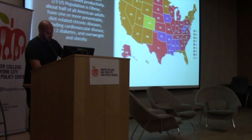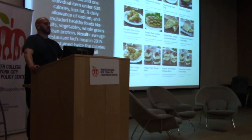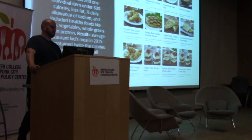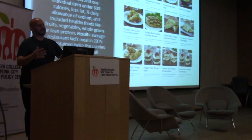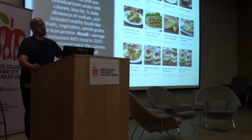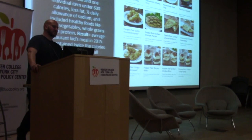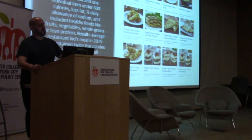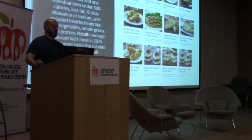This is the equivalent of voluntary industry marketing guidelines in the restaurant industry — the 'Kids Live Well' program. 150 restaurant chains at 42,000 locations committed to a voluntary self-regulatory program offering at least one children's meal under 600 calories, less fat, and half the daily sodium allowance, including healthy foods like fruits, vegetables, whole grains, or lean protein. In many cases, sodas were simply replaced with other sugary drinks. The result: the average kids' meal in 2015 still contained twice the calories recommended for small children and more than 60% of their recommended daily sodium. That's voluntary self-regulation.